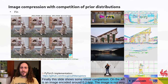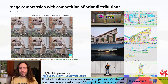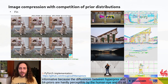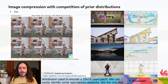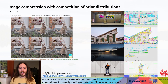Finally, this slide shows some visual comparisons. On the left is an image encoded at around 0.2 BPP. The differences between the hyperprior and 64 priors are hardly perceptible to the human eye. On the right, we can see different image segmentations where each color is the index of the prior distribution used to encode a 16×16 pixel patch. We can easily identify specialized networks, such as one that encodes vertical or horizontal edges and one that specializes in mostly uniform patches.